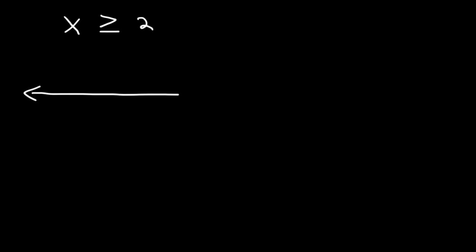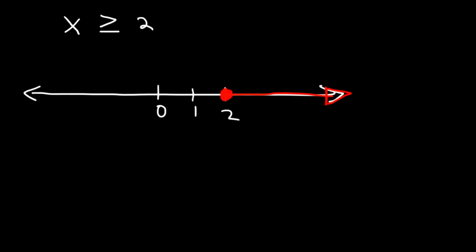Let's try another example. What about x is equal to or greater than 2? Let's plot it on a number line. So here's 0, and on 2, this time we have a closed circle, as opposed to an open circle. Because it's equal to or greater than 2, we need to shade towards the right.